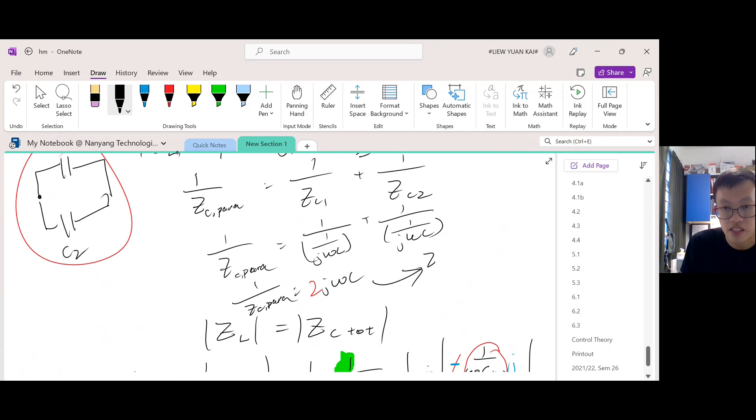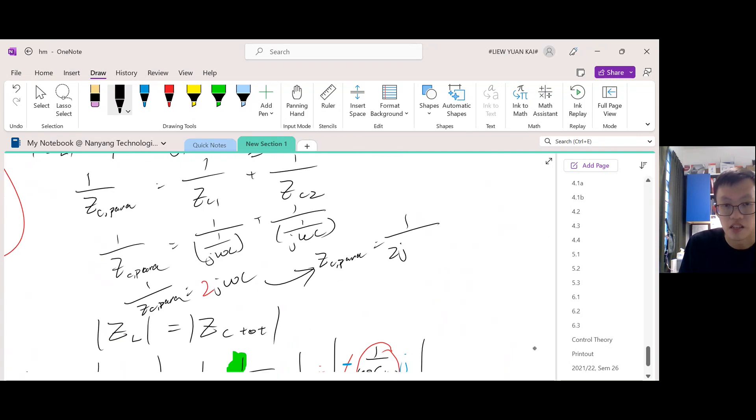Then you make Z_C parallel the subject: Z_C parallel equals one over 2j omega C. Now I'll just solve in the value. Omega is 100π that we got earlier, and then C is 20 microfarads, so 20 times 10 to the power negative 6. Let me just calculate this: 1 over 2j times 100π times 20 microfarads.